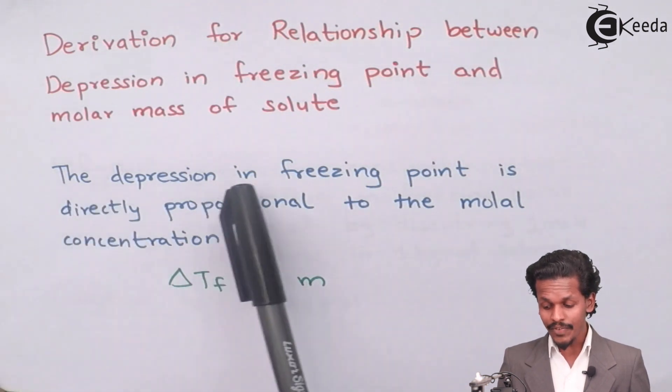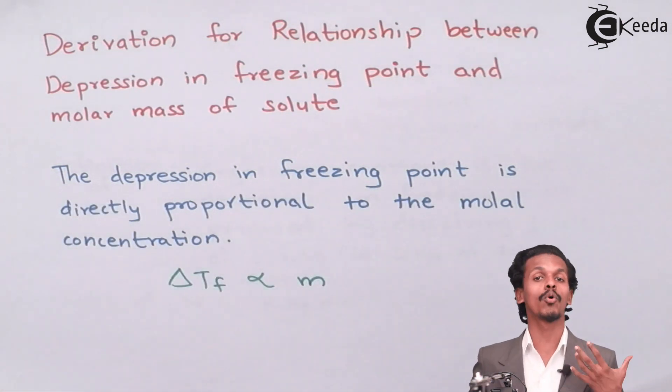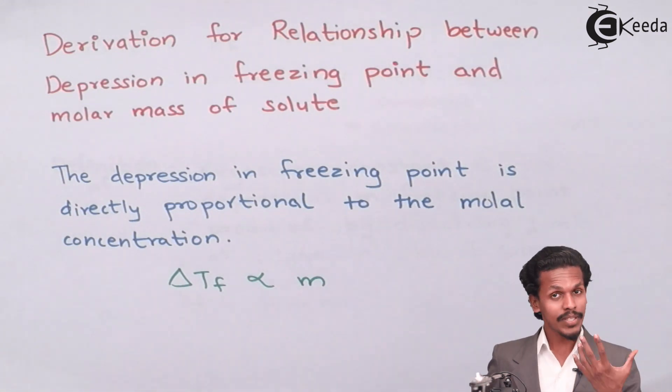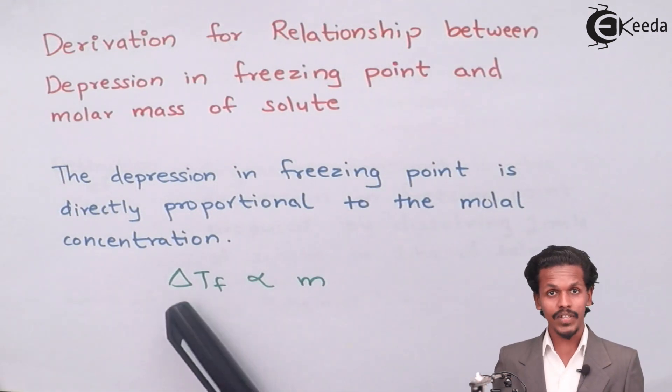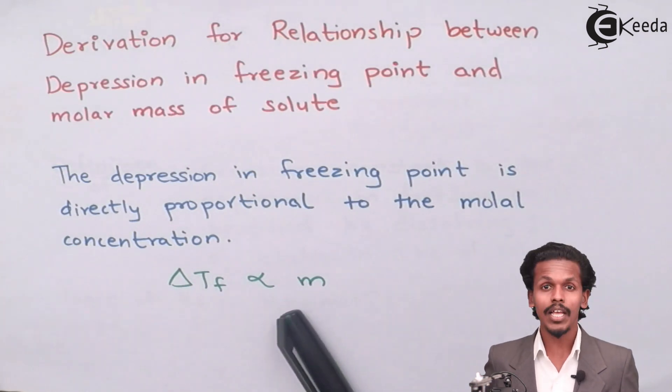So the depression in freezing point is directly proportional to the molal concentration. In this case, the molal concentration is nothing but the molality. So therefore, delta Tf, which is depression in freezing point, is directly proportional to the molality.